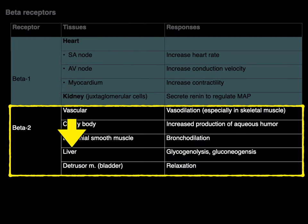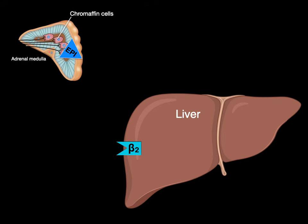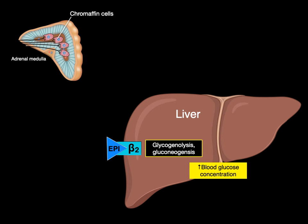Let's talk about the liver — stimulating beta-2 receptors on hepatocytes causes glycogenolysis and gluconeogenesis. When chromaffin cells secrete epinephrine, it results in glycogenolysis, breaking glycogen down to glucose molecules, or gluconeogenesis, the production of glucose — either of which causes an increase in blood glucose concentration.